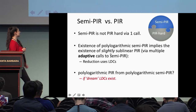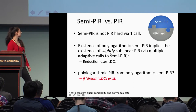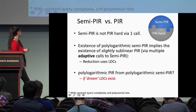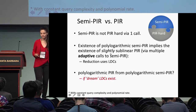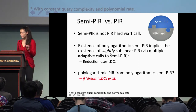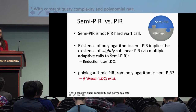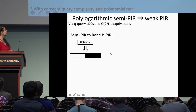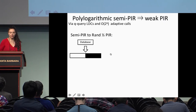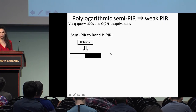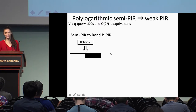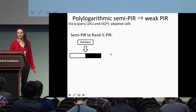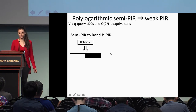Our reduction uses locally decodable codes. If we wanted to construct polylogarithmic PIR from polylogarithmic semi-PIR directly, that would be a breakthrough in coding theory — it would require constructing dream locally decodable codes with constant query complexity and polynomial rate.